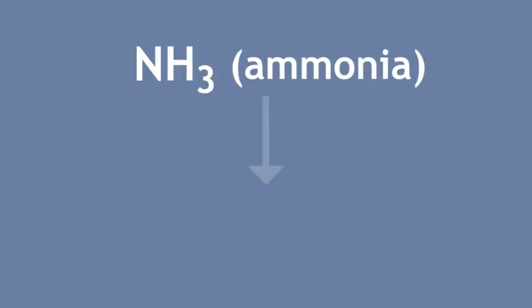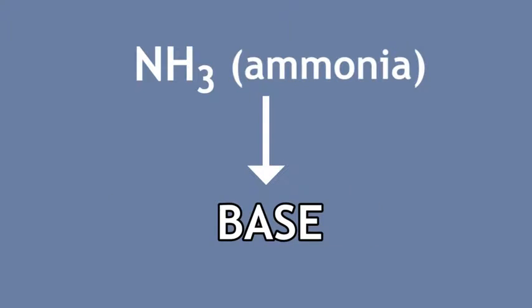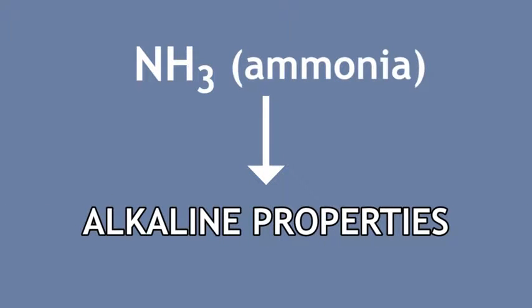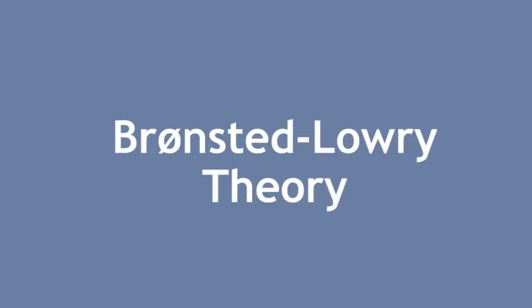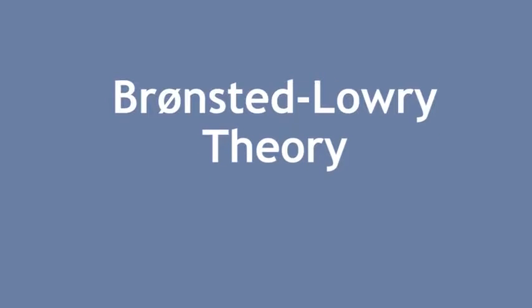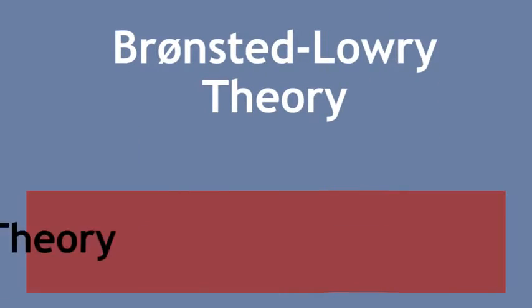We know that ammonia can act as a base and exhibits alkaline properties, but contains no hydroxide ions. How is this possible? In this lesson, we will learn about the Bronsted-Lowry theory of acids and bases, which fills in the gaps in the Arrhenius theory.